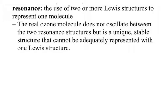So when we represent ozone, we must draw both Lewis dot structures and use a double arrow between them — both structures represent ozone, not one nor the other. You need to show both when representing ozone. Resonance is the use of two or more Lewis dot structures to represent that one molecule. The real ozone molecule doesn't oscillate between the two resonance structures; it's a unique, stable structure. Since it cannot be adequately represented with one Lewis dot structure, you must show both.